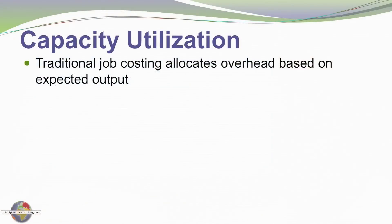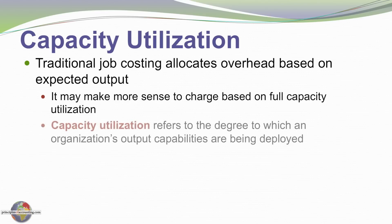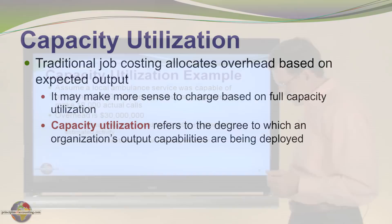Job costing becomes an interesting challenge. Traditional job costing allocates overhead based on expected output. It may make more sense, however, to charge based on capacity utilization — that refers to the degree to which an organization's output capabilities are being fully deployed.